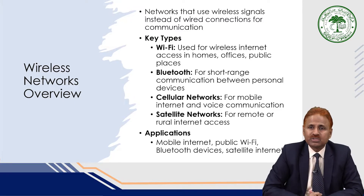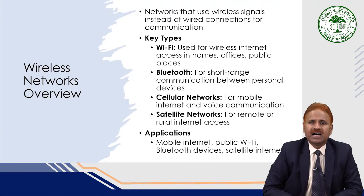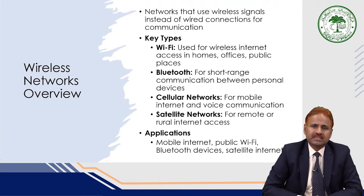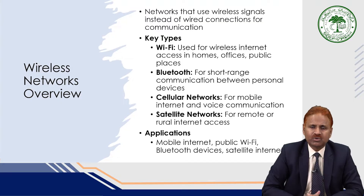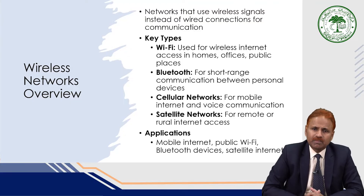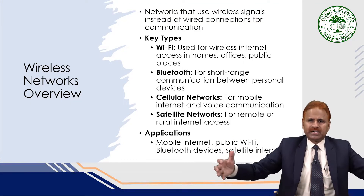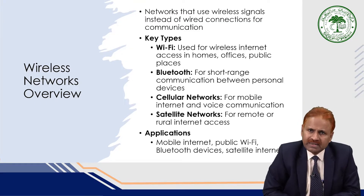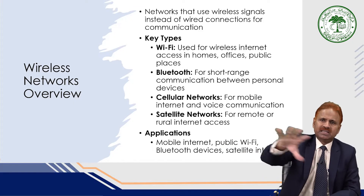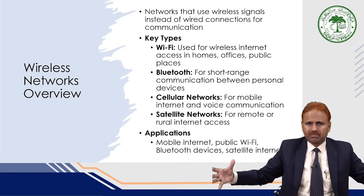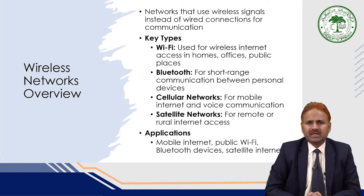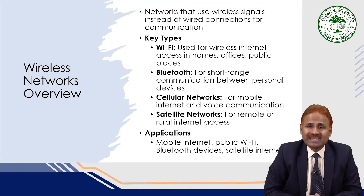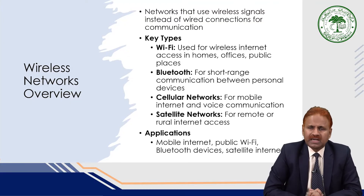Networks that use wireless signals instead of wired connections for communication are known as wireless networks. A key type is Wi-Fi — wireless fidelity — which is used for wireless internet access in homes, offices, or public places. Using Wi-Fi technology, you can connect various computers placed in a building or room to form a wireless LAN.